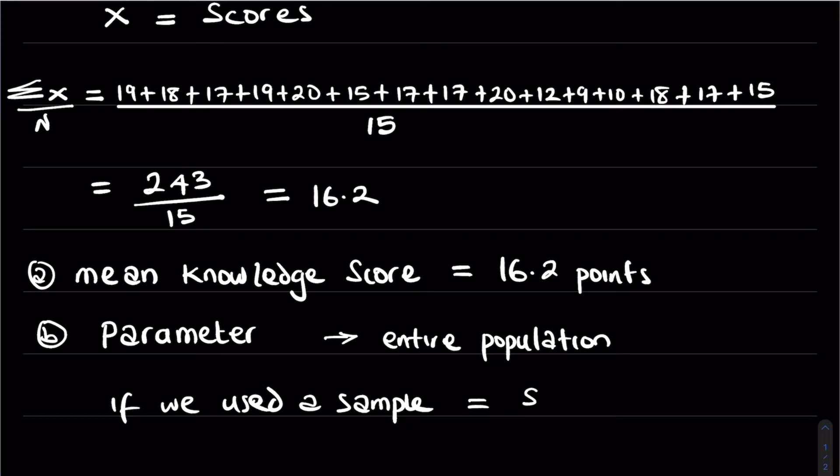If a sample of health workers in the facility was used for this survey, then we would have said this mean knowledge score is a statistic. But since we used the entire population to compute the mean score, we say this mean is a parameter.